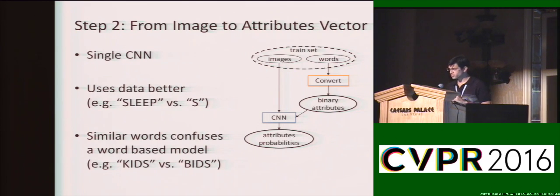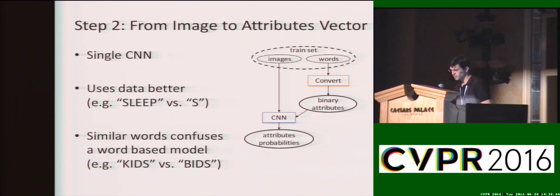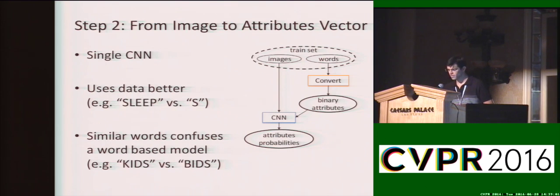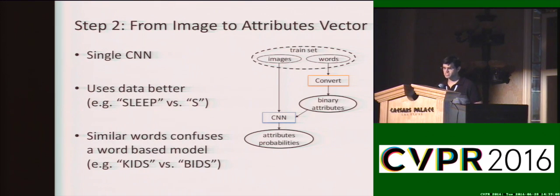Now we want to convert from an image to an attributes vector. We take our training set and convert the words into binary vectors using step 1. So now we have images and we have binary vectors, and we can train a convolutional neural network to simultaneously predict all of the attributes, solving a multi-label problem. Our network has a somewhat unique structure, which I'll soon review, but I first want to explain the benefits of using an attributes-based model versus a word-based model.